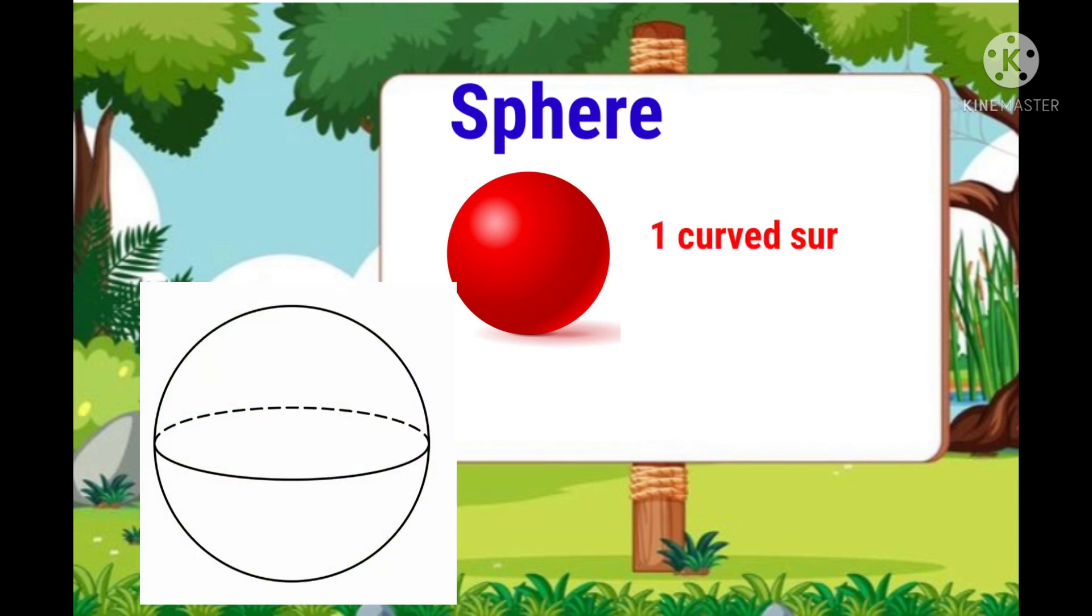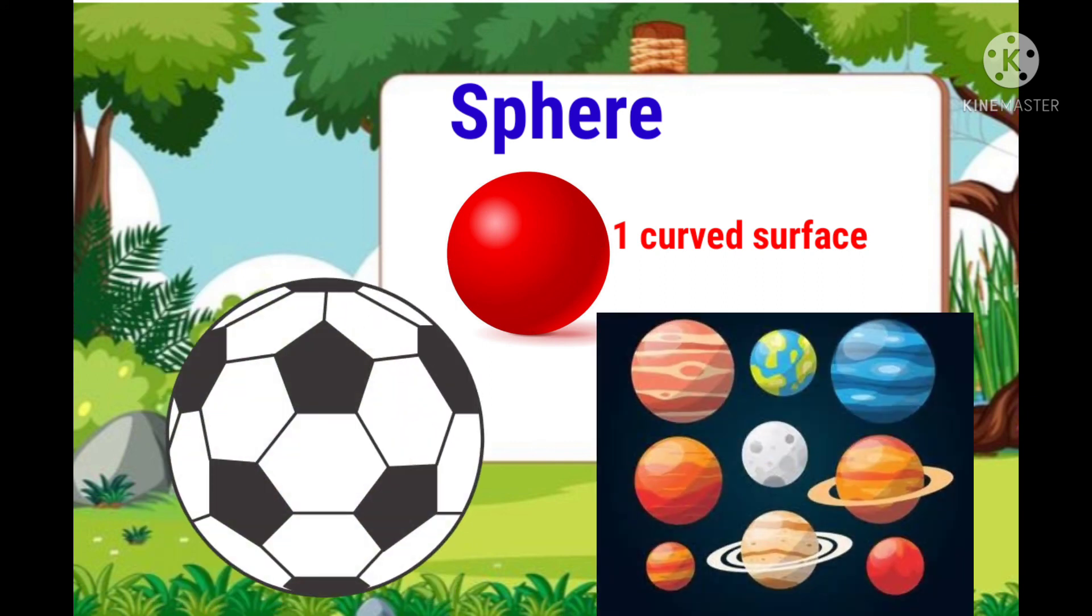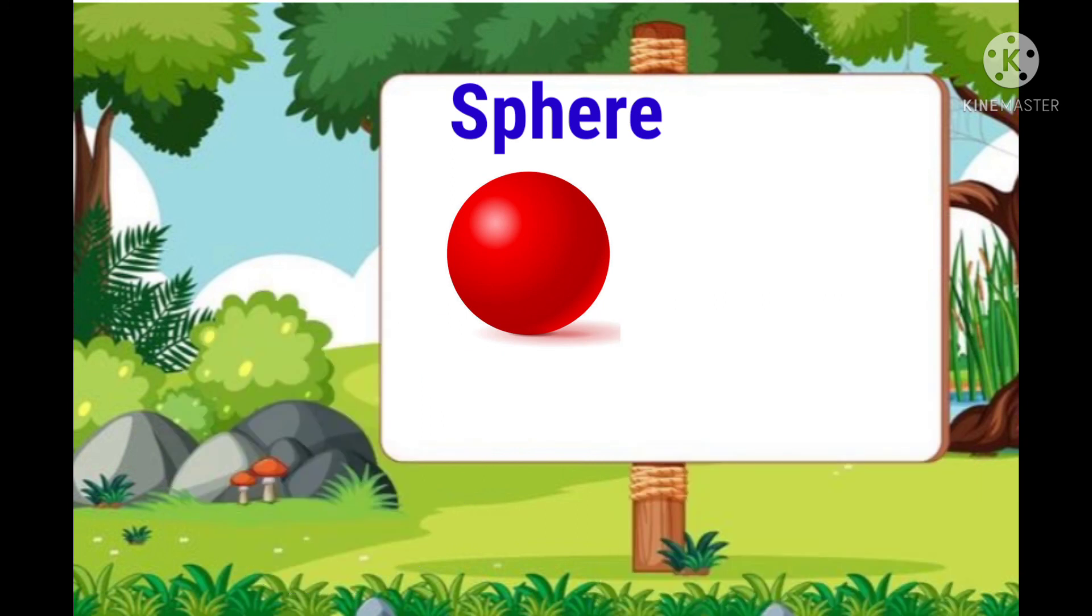A sphere has 1 curved surface. Ball and planets are the examples of sphere.